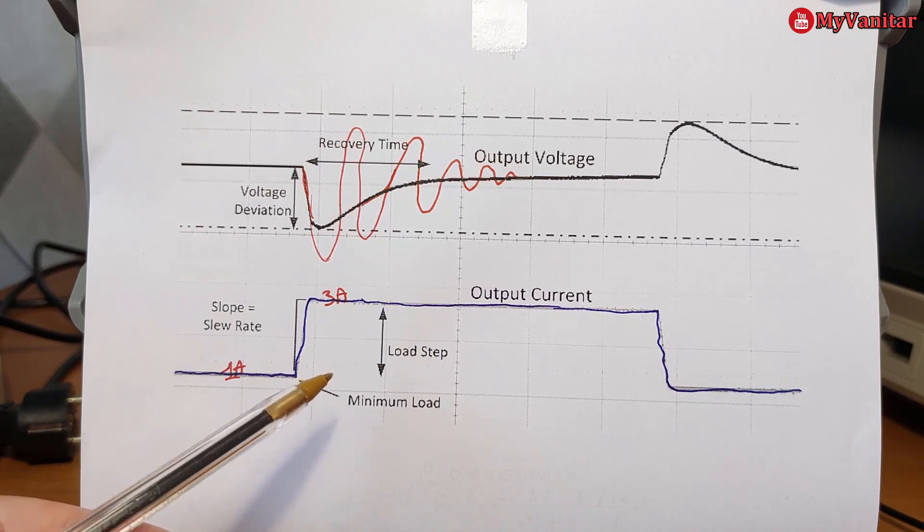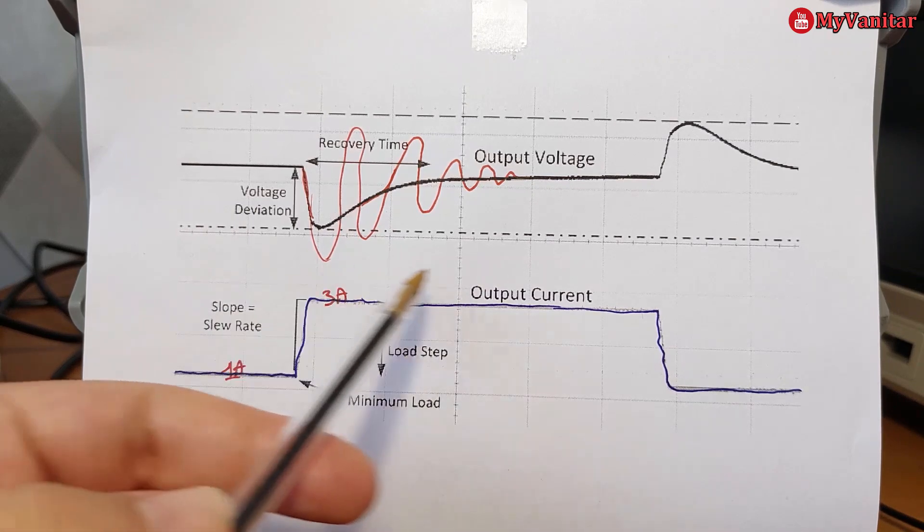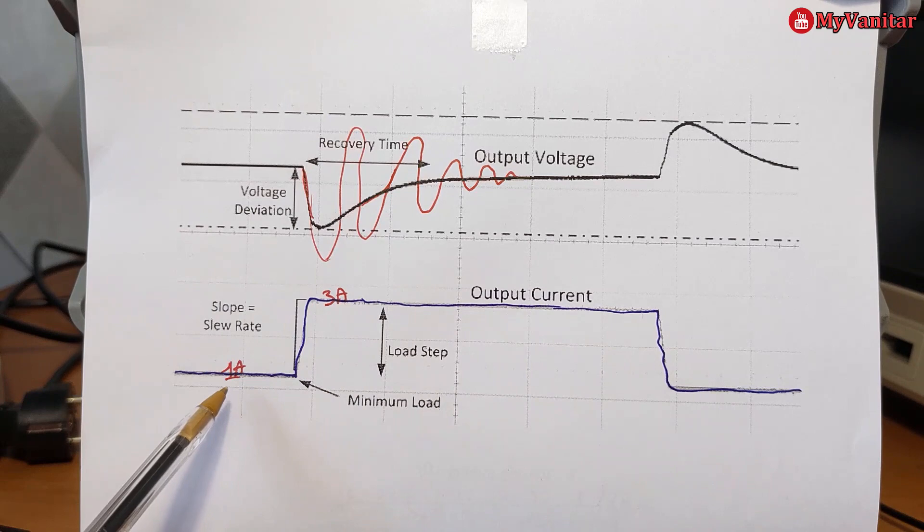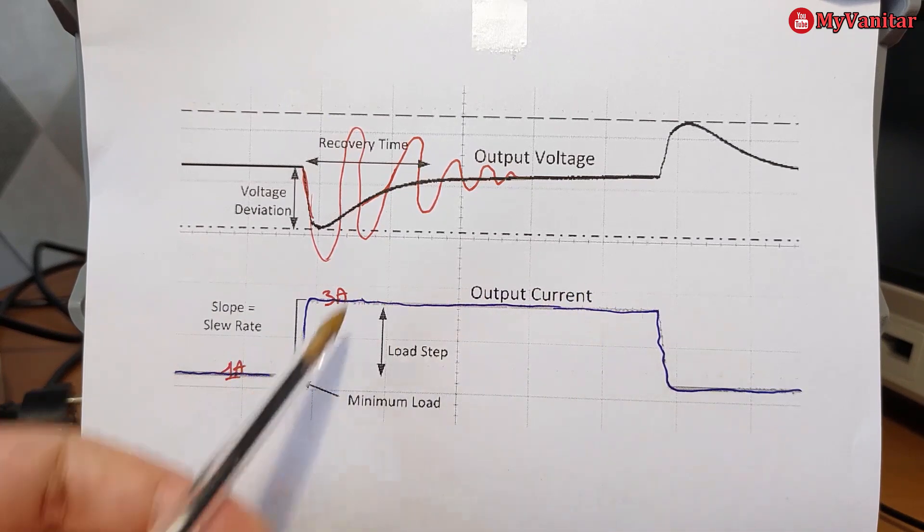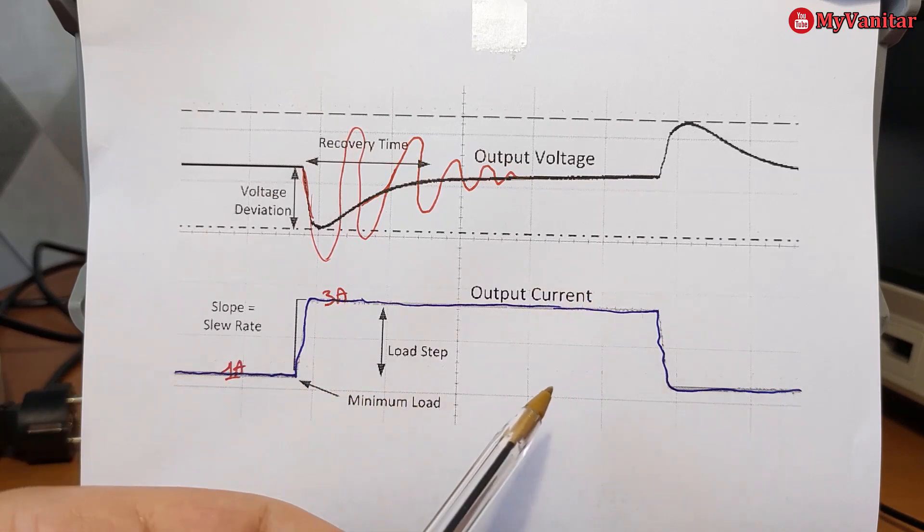When the user turns on the headlight, a huge current will be applied to the output of the power supply. The power supply should act efficiently and the performance should be good, otherwise it shows ringing.